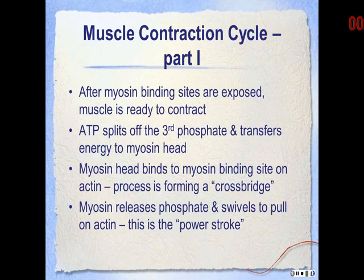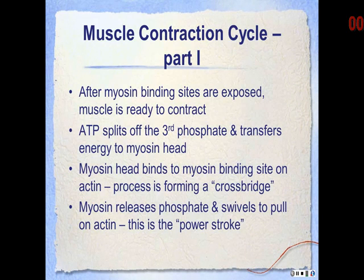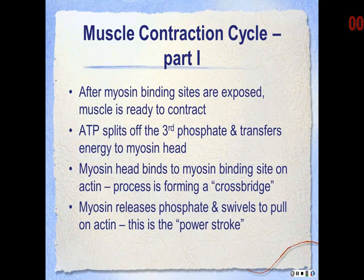We must use energy in the form of ATP, or adenosine triphosphate, to fuel the contraction. The third phosphate is split off of the ATP and transfers its energy to the myosin head. The energy used to attach the third phosphate is the highest, so that's where you get the most energy from ATP — by removing the third phosphate.